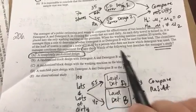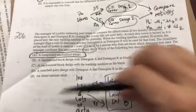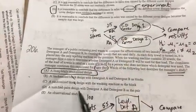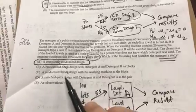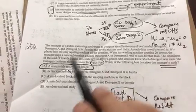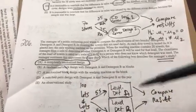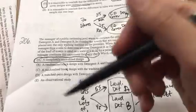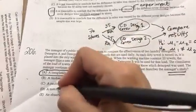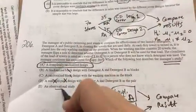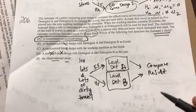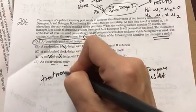Now I didn't do any blocking. That would be to separate it before you designed it. So it's not blocking. These are not matched pairs. That would be if you used detergent A on one towel, the same exact towel, and then B on the same exact towel. So this is not matched. This is definitely not an observational study because the treatment is the soap.